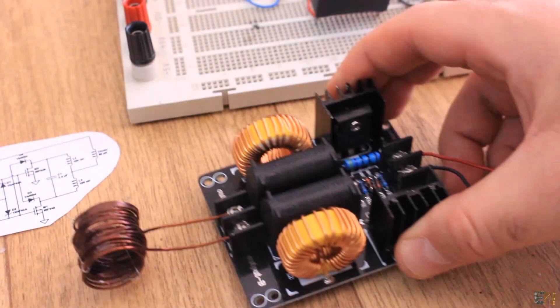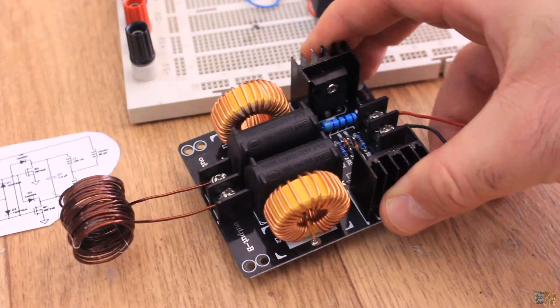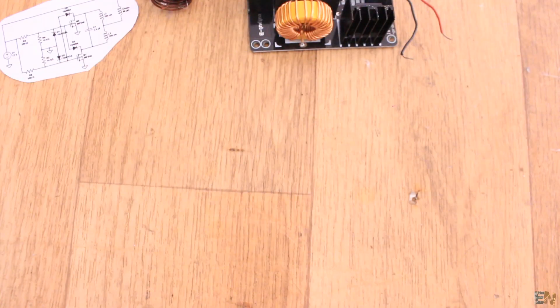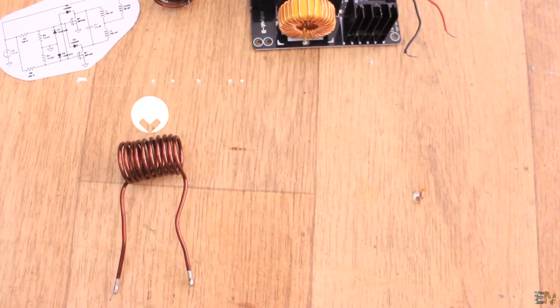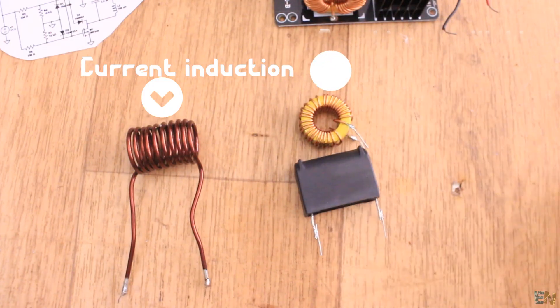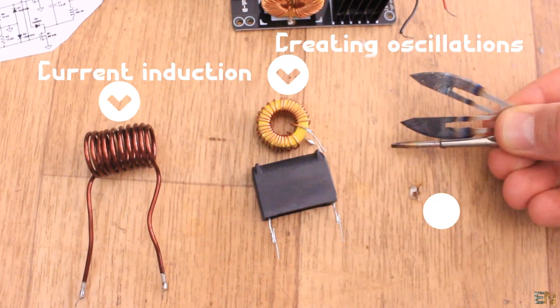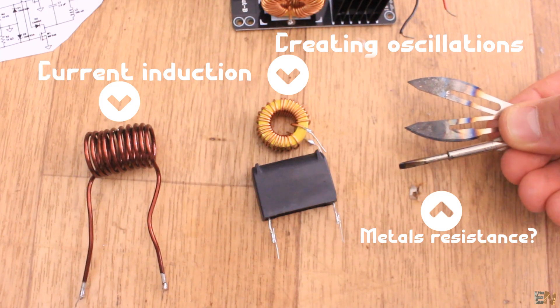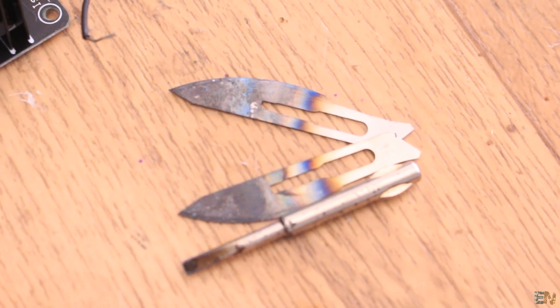What's up my friends, welcome back. To understand how this induction module works, we need to know 3 main things. First, how magnetic fields could induce currents. Second, how the combination between coils and capacitors will resonate. And finally, we will look over the internal composition of metals. So, let's start with the first part.